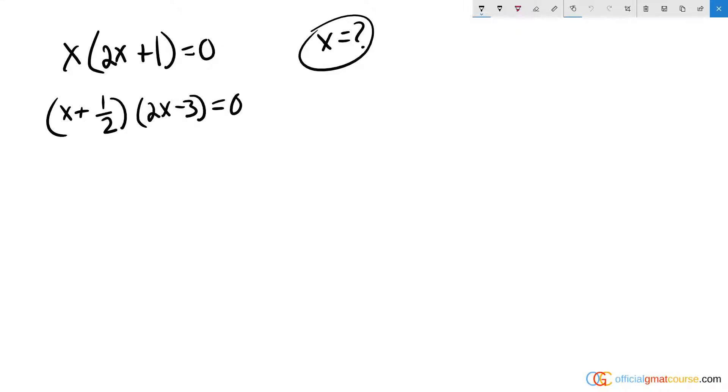Alright, so this is a very straightforward question if you know how to tackle it. What we don't want to do is get bogged down by too much algebra. We know that in both these situations, if I plug in a value for X, it'll make both of these equations equal zero. That means that X has to be one of the solutions from this equation and one of the solutions from this equation.